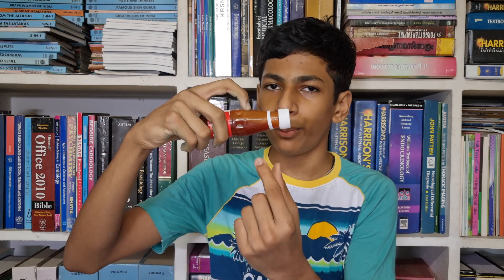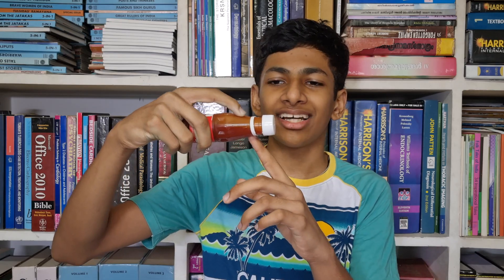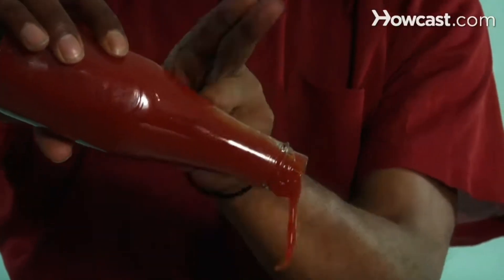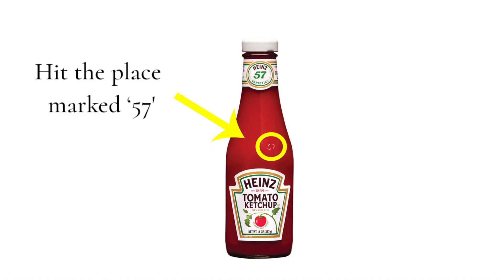There is a very interesting solution to this problem. If you tap the ketchup container at its neck, the ketchup at the neck portion will turn into liquid and there is nothing to stop it from exiting the container, so it will just come out easily. In fact, on most ketchup bottles there is a number at the neck of the container indicating the place to tap in order to get the ketchup out.